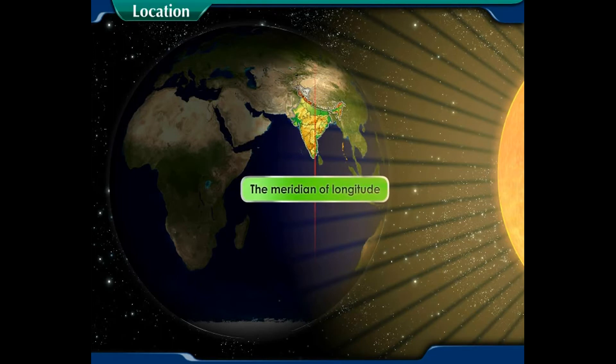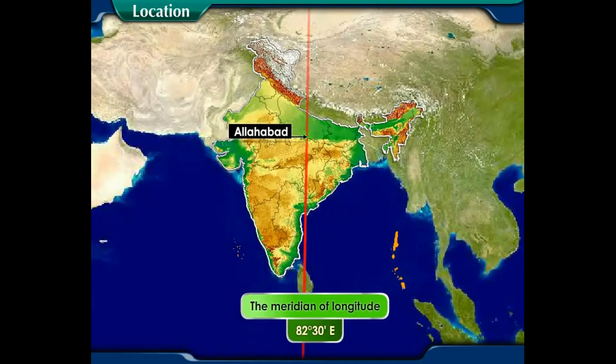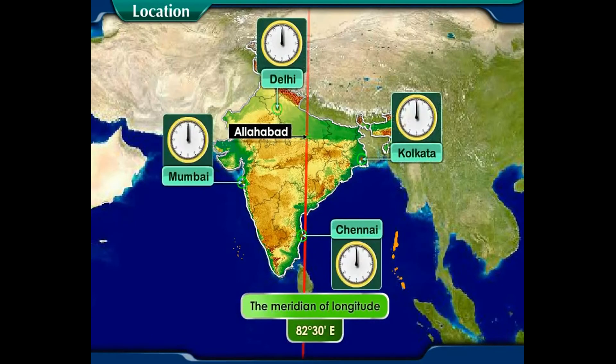The meridian of longitude 82 degrees 30 minutes east, which passes close to Allahabad, is our standard meridian, and Indian Standard Time or IST is fixed as per this local time. This time is followed throughout the country.